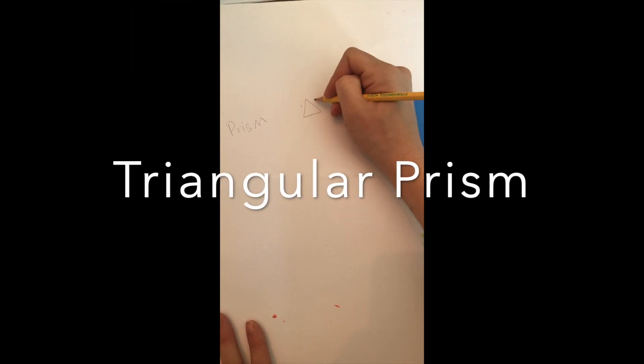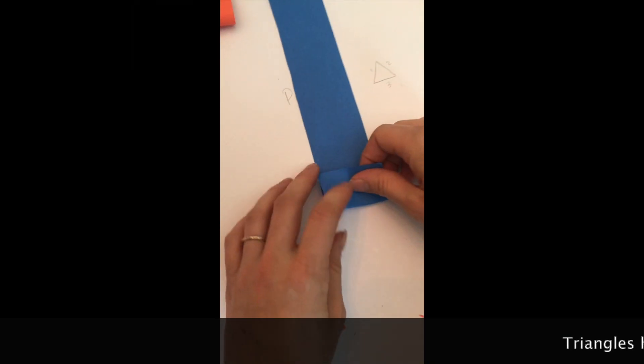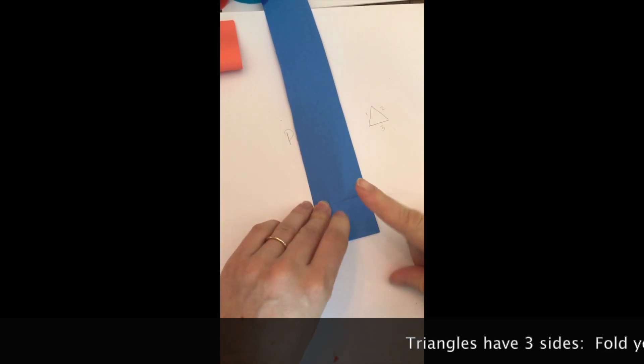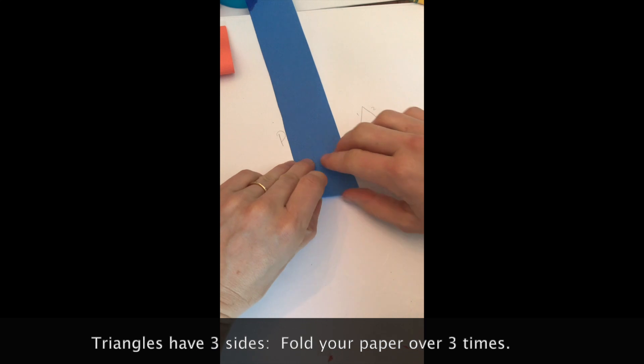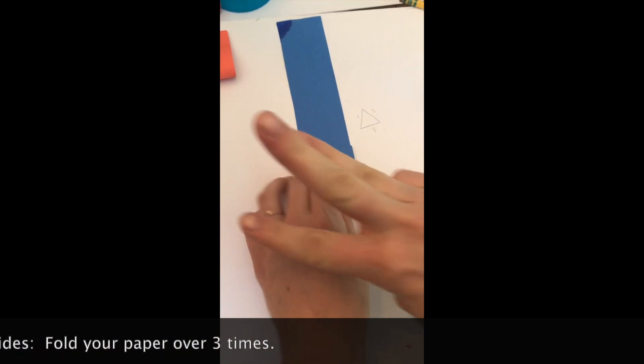A triangular prism is a triangle on the ends. Triangles have three sides. I take a strip of paper, I fold it over three times. Make sure to crease it really well.